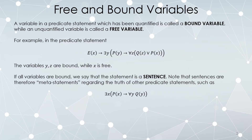If every single variable is bound, we call it a sentence, and it's actually now a statement about the underlying statements. Here we have a sentence. The variables are x and y — x has been bound by the existential quantifier, and y has been bound by the universal one. So every variable has been bound, it's a sentence, and this is a statement about for which constants the underlying statement is true.